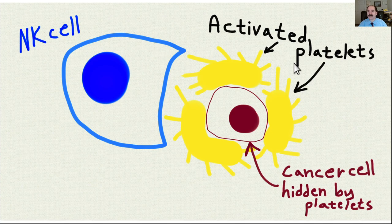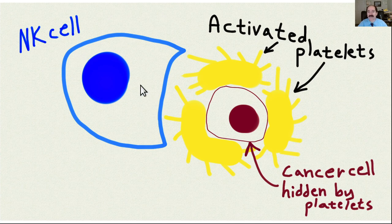This occurs when somebody has a reason for platelets to be activated — for example, excessive psychological stress, among other causes. Activated platelets have a tendency to encircle the cancer cell, which is bad because when a natural killer cell, a lymphocyte, comes along to remove the cancer cell, it first has to check the identity of the cancer cell. But instead, all it binds to is the platelets blocking access.